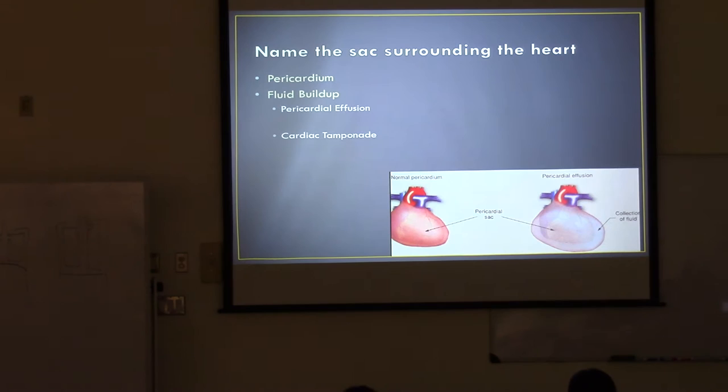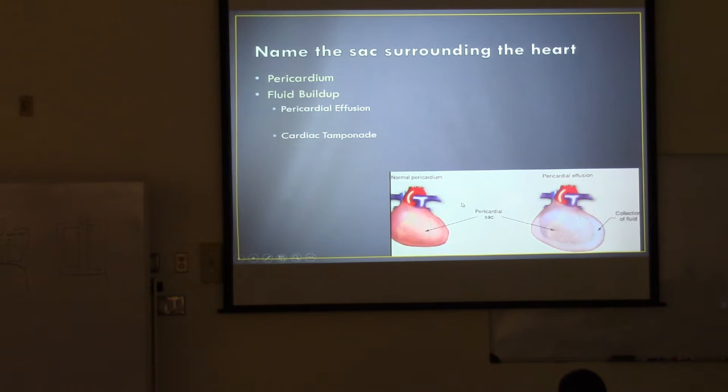Name the sac surrounding the heart. It's called the pericardium. The picture shows a normal pericardium where you've got a sac around the heart and there's very little fluid in the sac — just enough so that heart movement can occur.